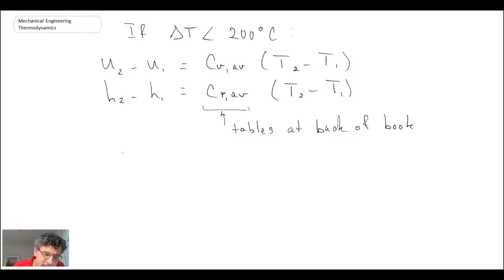A final comment that I want to make about the specific heats are a relationship with the ideal gas constant. So we can write Cp is equal to Cv plus R, your ideal gas constant. And another thing is the ratio of specific heats.